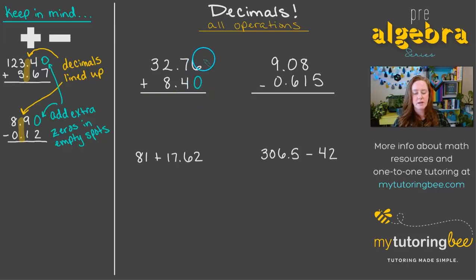So let's go ahead and add this one. Now we're just going to start from the right and work our way left just like we would with any normal addition problem. So we got 6 here for 6 plus 0. 7 plus 4 is 11. I'm going to go ahead and drop down my decimal right there. And then 8 plus 2 is 10 plus 1 more is 11, and then 3 plus 1 is 4. So we get 41.16.